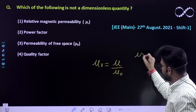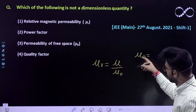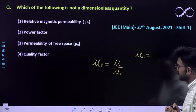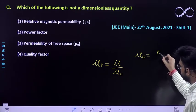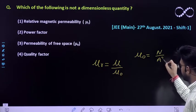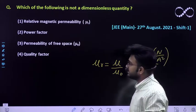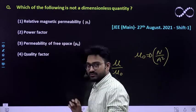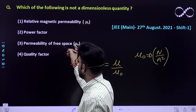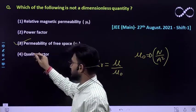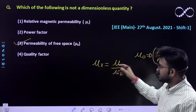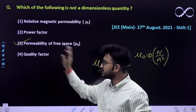And we also know that the unit of permeability of a free space is given by relationship. It is given by Newton per ampere square. So this is its unit. So we can also show that out of the four options, permeability of the free space doesn't, it is not unitless.